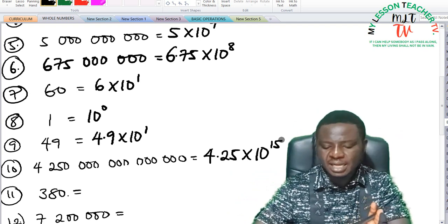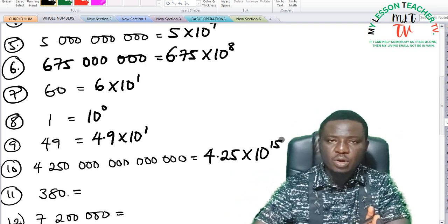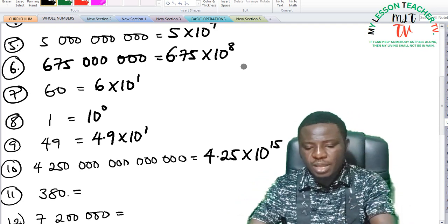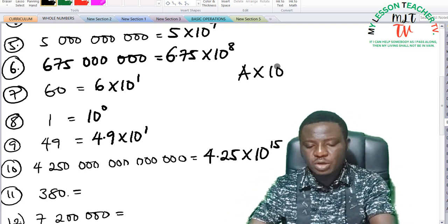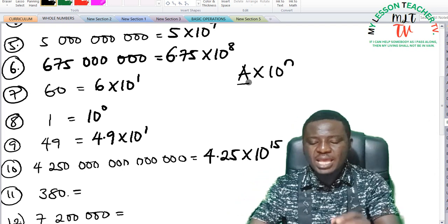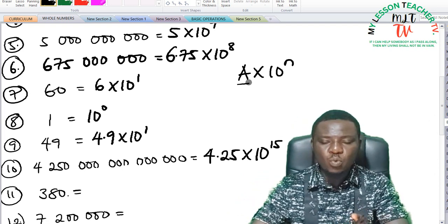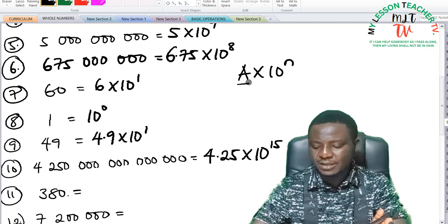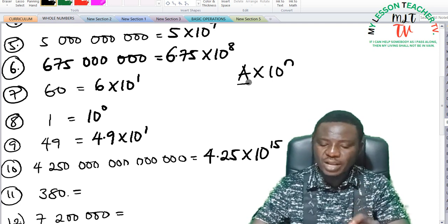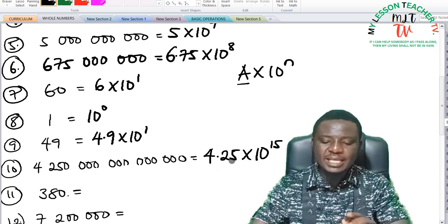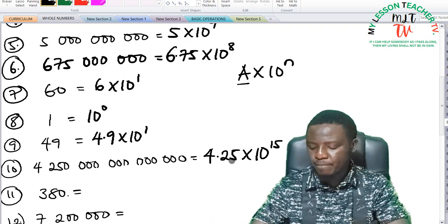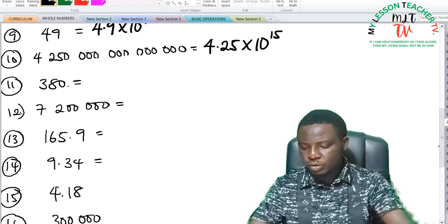Expressing numbers in standard form is any number expressed in the form A times 10 raised to the power of N, where A is a number that falls between 1 and 10, and N is any positive or negative whole number. Don't forget that. So always ensure that the value of A falls between 1 and 10. It may be a fraction or a whole number.